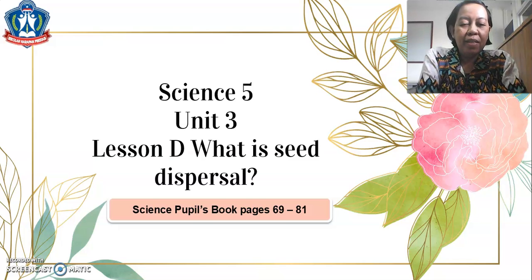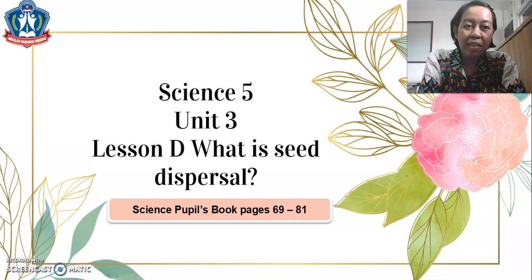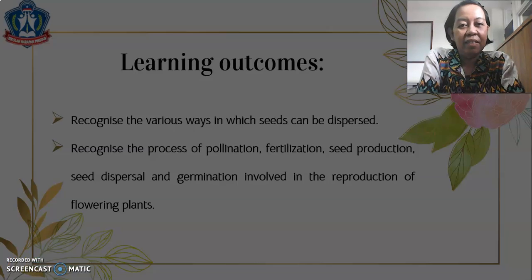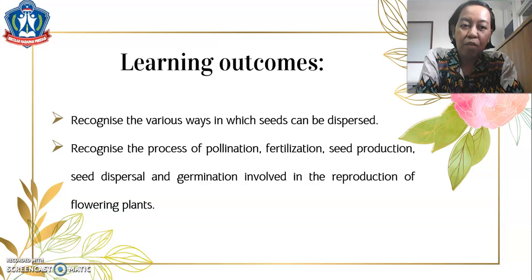Hello P5 students, welcome again to our science class with Miss Ida. We are now on Unit 3, Lesson D: What is seed dispersal? Let's get our science People's Book and open it on page 69. Our learning outcomes are: recognize the various ways in which seeds can be dispersed, and recognize the process of pollination, fertilization, seed production, seed dispersal, and germination involved in the reproduction of flowering plants.